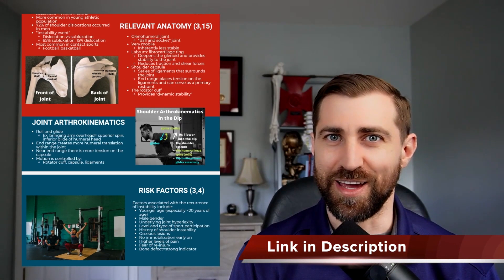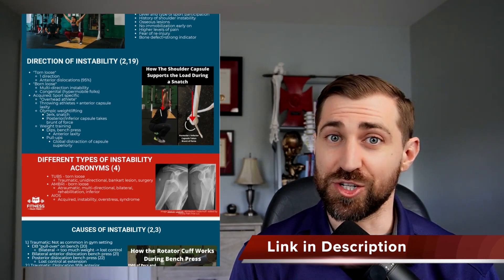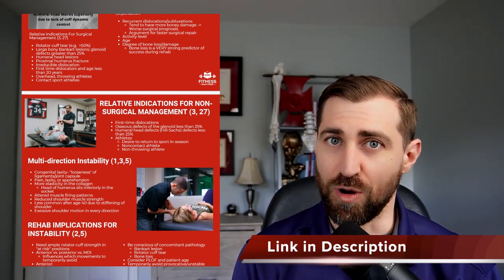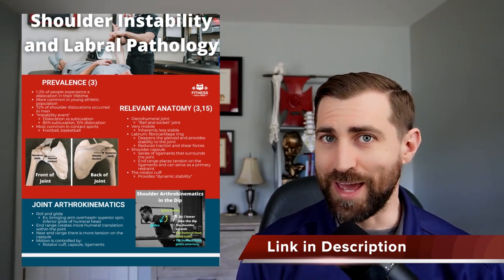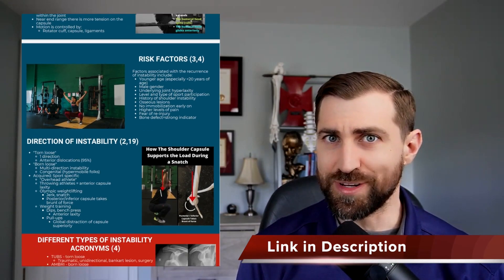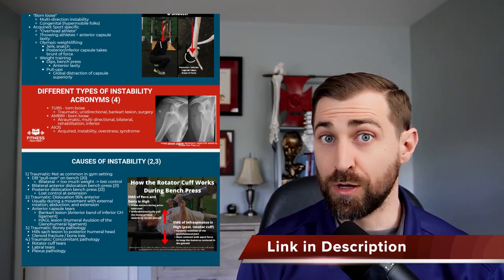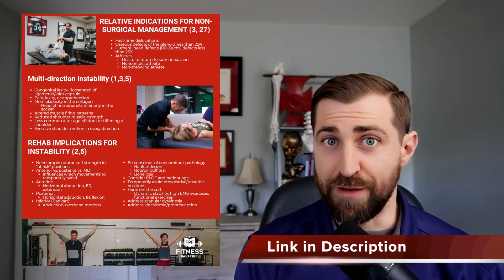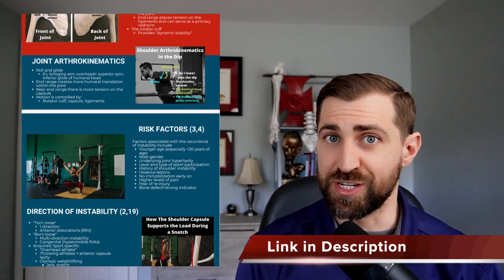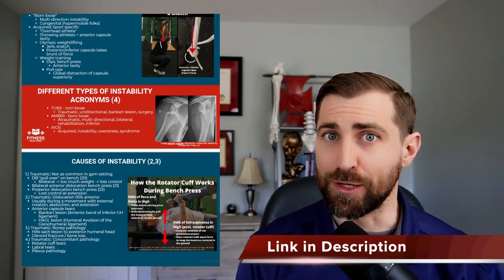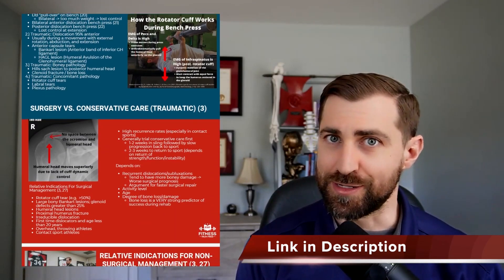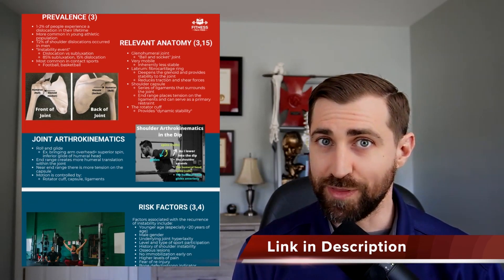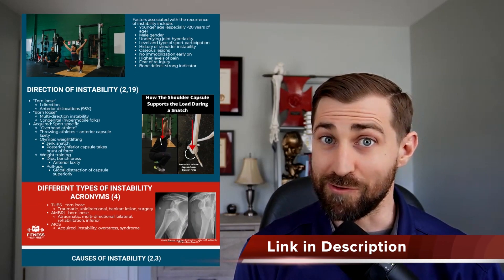To go along with the video today, I have a little gift for you. It's an evidence-based cheat sheet for shoulder instability — a four-page PDF that goes over everything you need to know about shoulder instability. We go over prevalence, anatomy, joint arthrokinematics, risk factors, different types of instability, causes of instability, whether or not your patient should undergo surgery or have conservative care like physical therapy, and finally rehab implications for all the different types of instability. So if you're looking to get up to speed about shoulder instability in less than 10 minutes, then this PDF is for you. I'll leave a link in the show notes in the description — go ahead and click on that, download it, and get back to what you're learning about right now.